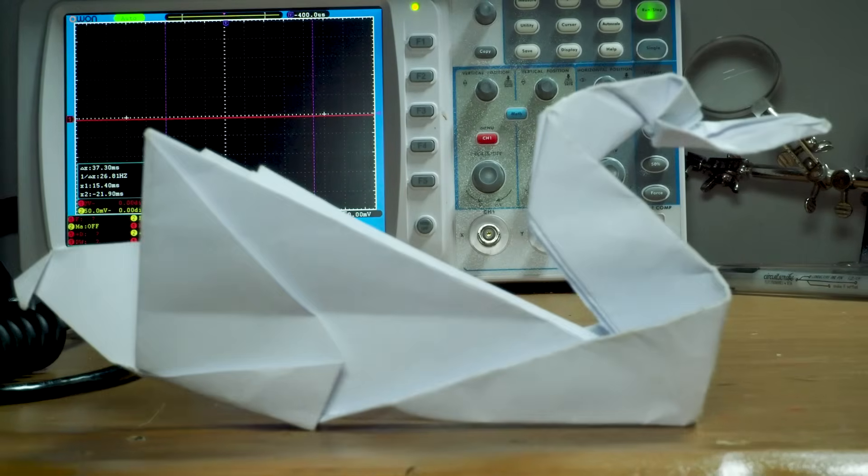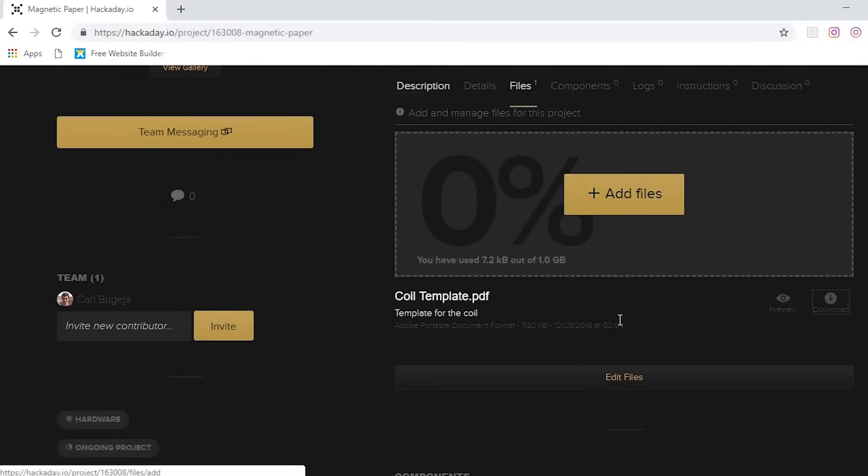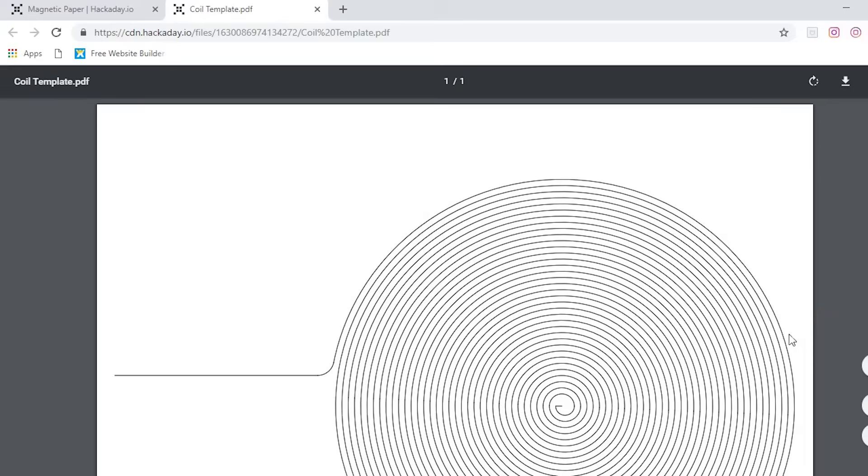So I ordered some more conductive pen. In the meantime let me know in the comments below what kind of applications I can use this for. The best idea that I could come up with is origami, but it's amazing to see that this simple idea can work. I have also released this PDF file for this coil online on my hackaday.io page, so you can download it and try it yourself. Thank you for watching and subscribing to my channel, see you soon.